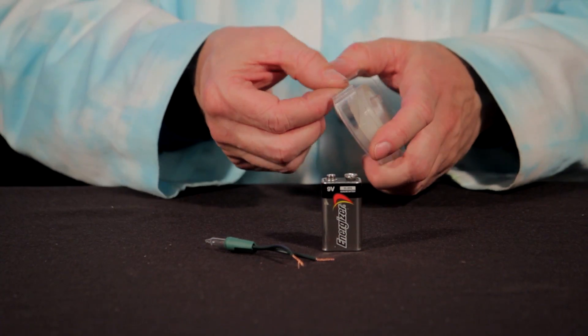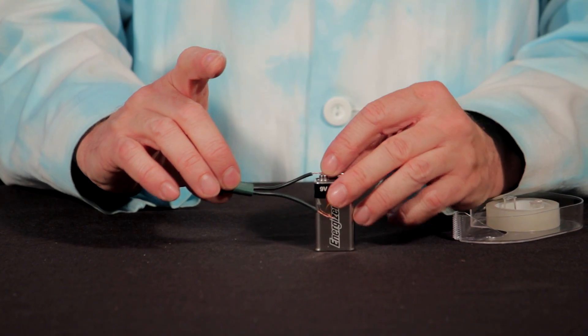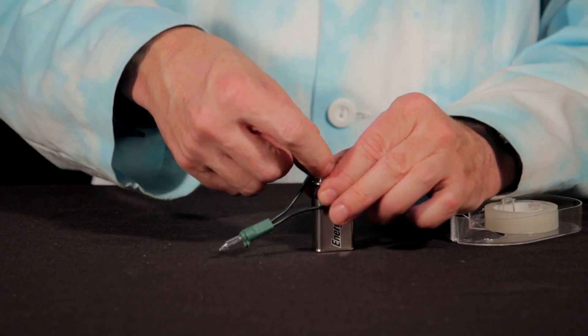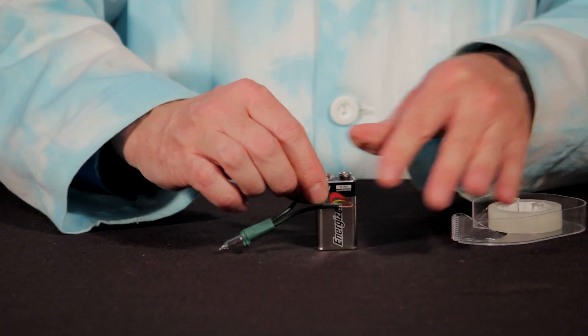Now it's time to tape one end of one of the wires to one end of the battery terminal. So go ahead and hold it in place and then use some tape to secure it. Make sure that the wire is touching the terminal.